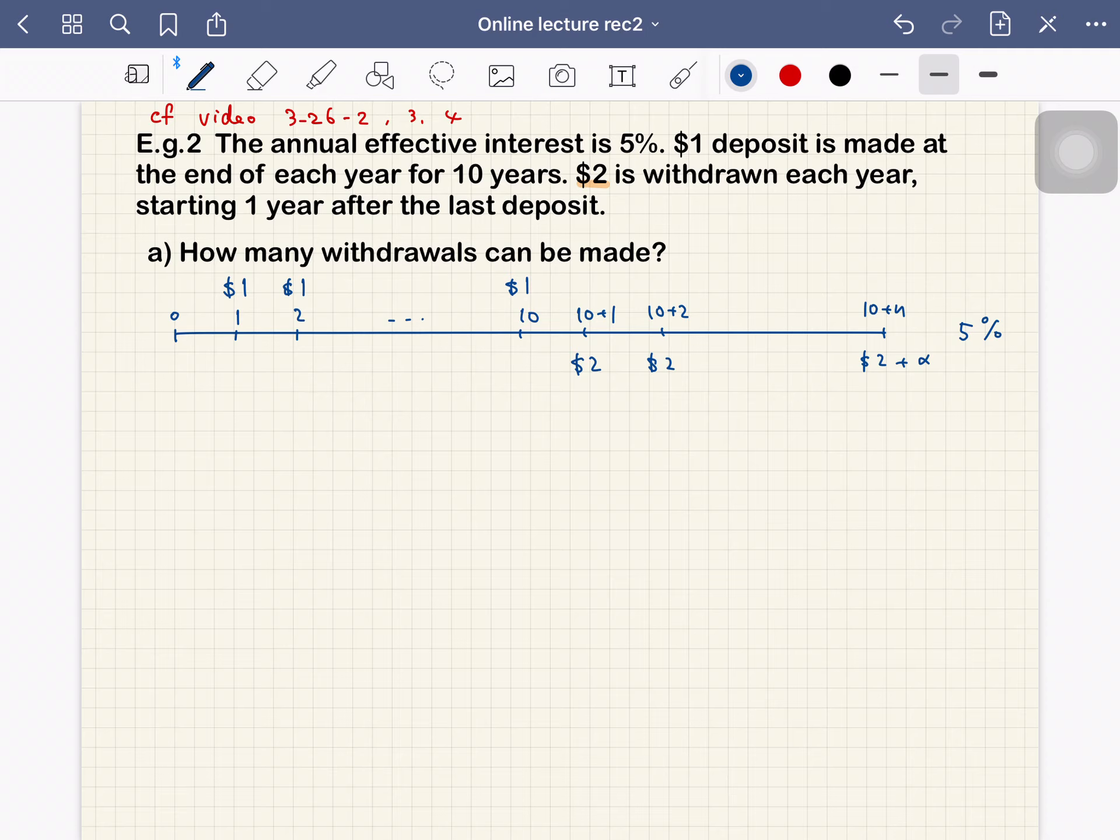At first we want to calculate the accumulated value of this 10 times $1 at time 10. So a new time diagram starts at 10, and the present value is by definition s angle 10 at 5%.